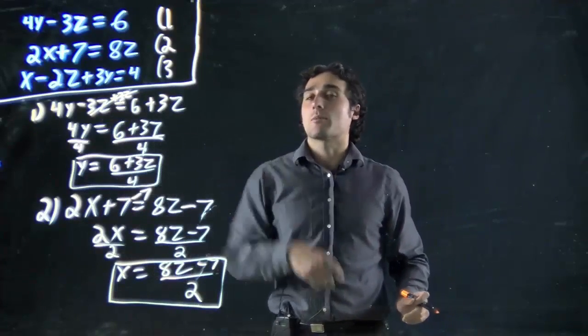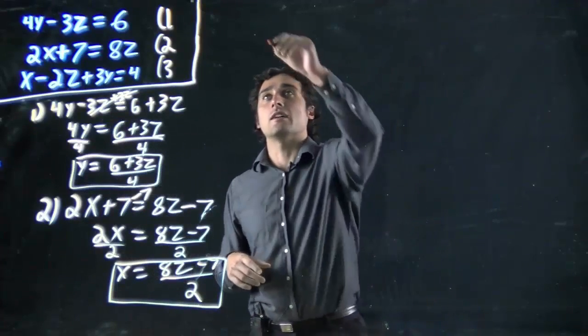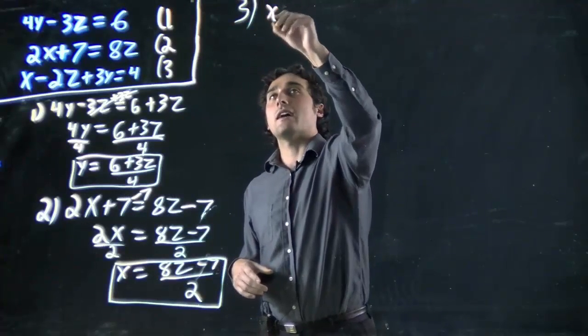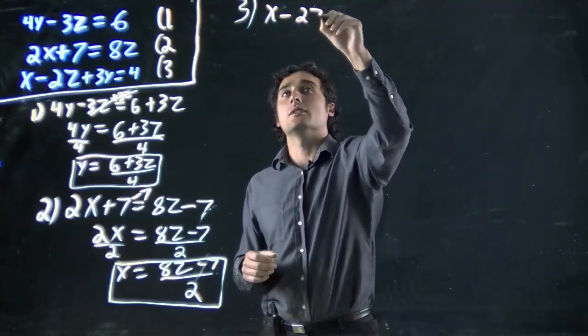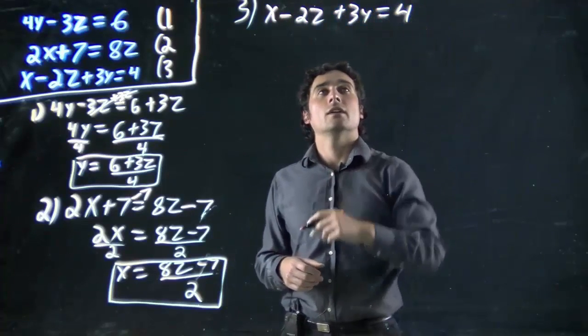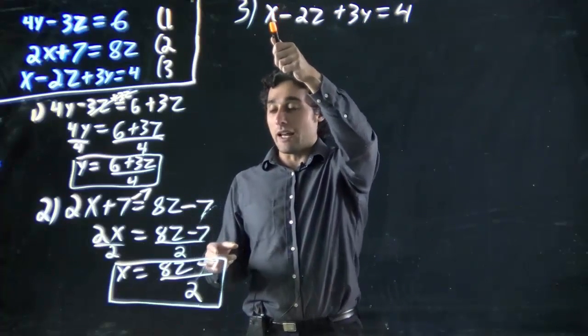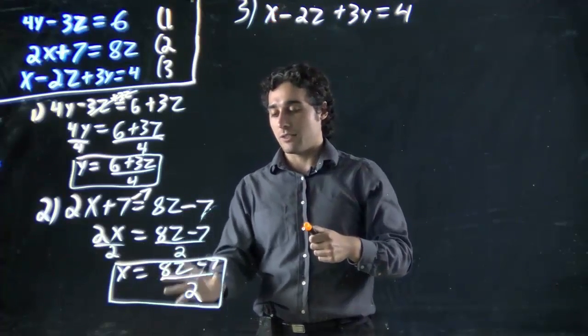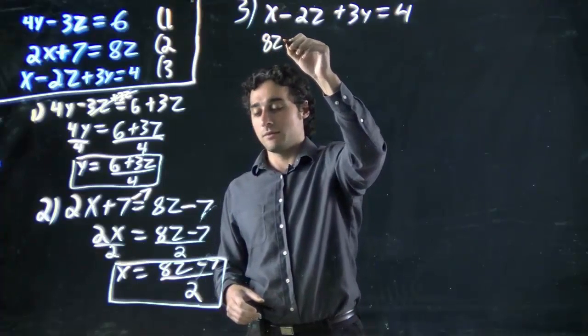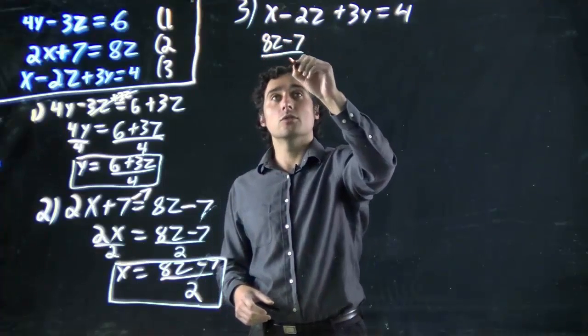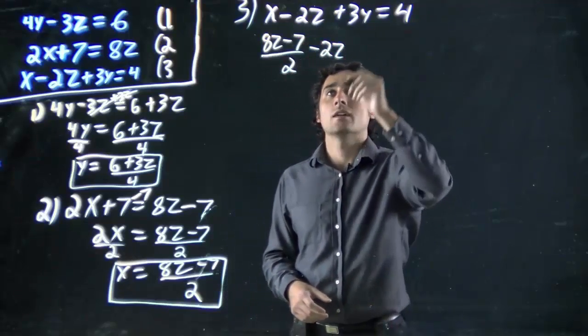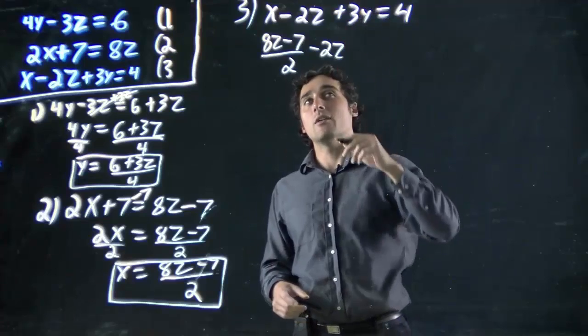We've got x, we've got y. We're going to place both of those in equation 3. We're taking equation 3, which is x minus 2z plus 3y all equal 4. We will get rid of x because we know x is equal to this mess right here. Replace x with 8z minus 7 all over 2.